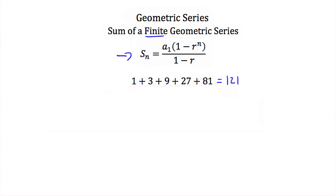This formula: S(n) is your sum, where n is the number of terms in your series. In this example there are 5 terms: 1, 3, 9, 27, and 81. a1 is the first term in your series — in this example that would be 1. n again is the number of terms in your series, and r is your common ratio.